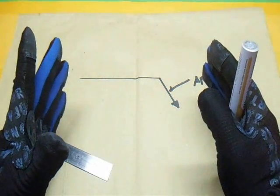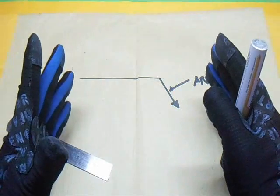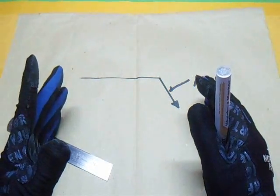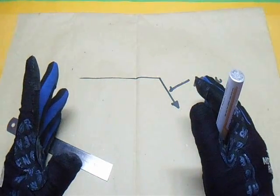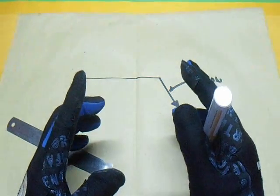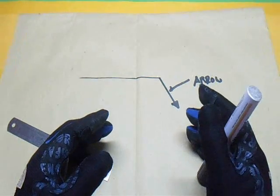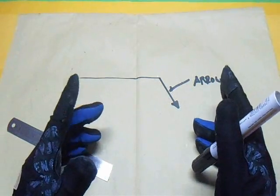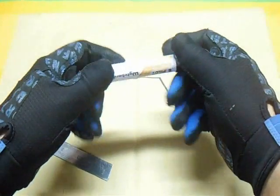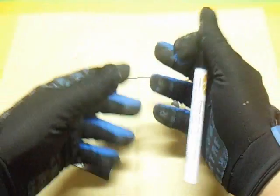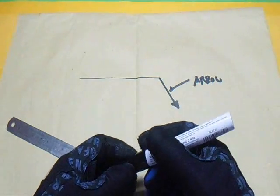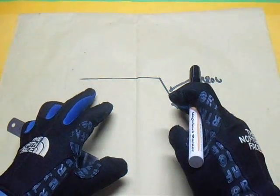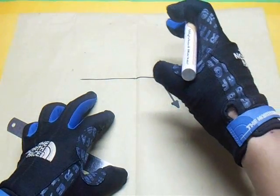This reference line shows all the weld symbols' locations. For example, the symbols for the group: square, scarf, V, bevel, U, J, flair V or flair bevel, fillet, plug, stud, projection, seam, back or backing surface. I'm going to show you where these symbols are put in the reference lines.